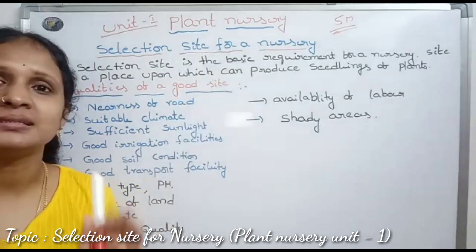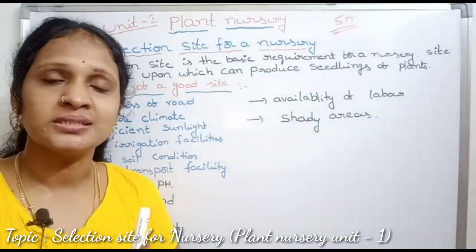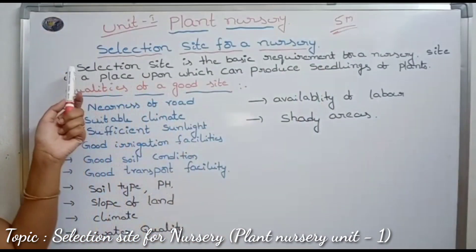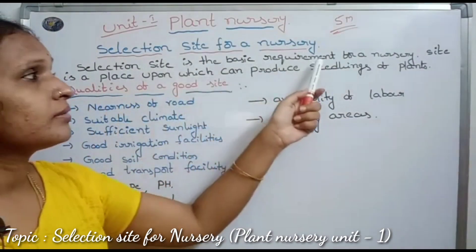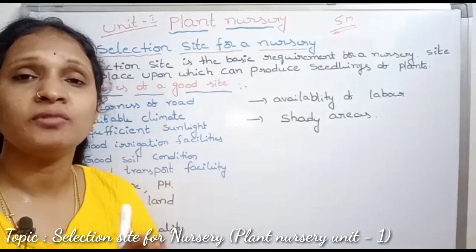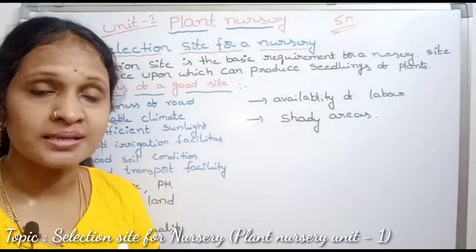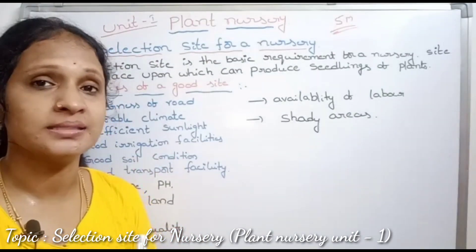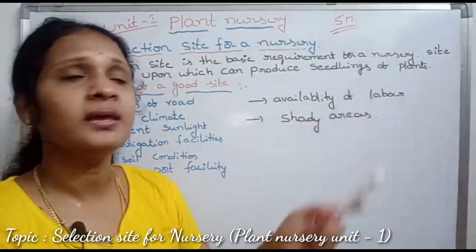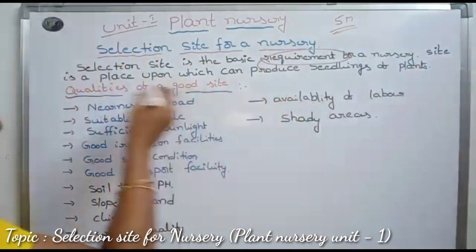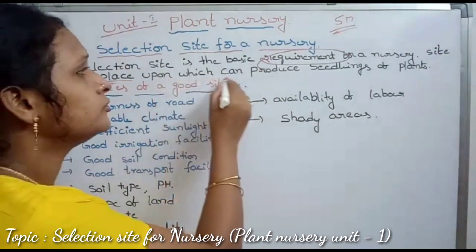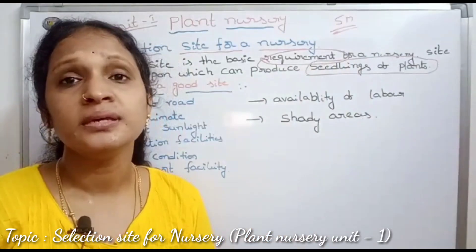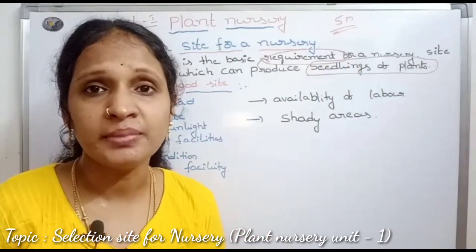The first topic is the selection of a site for a nursery. If we conduct a nursery, we need a site, and we need to consider the quality of it. Site selection is the basic requirement for a nursery. A site is a place which can produce seedlings of plants. If we have a site, we have a choice.